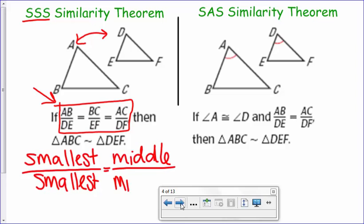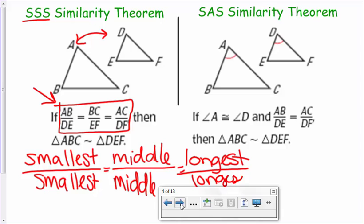And then finally, it should be the longest to the longest. Because sometimes you'll have triangles that are overlapping, like we've seen, or twisted around and turned. So if you just take the numbers from one triangle to the next and match them up like that and then simplify, they should still have the same scale factor. If they don't have the same scale factor, then they're not similar.